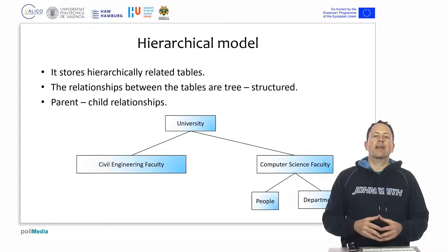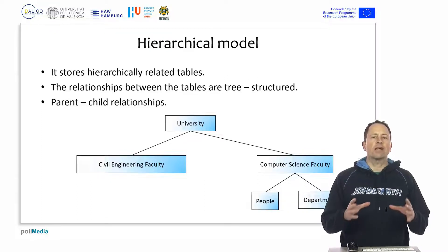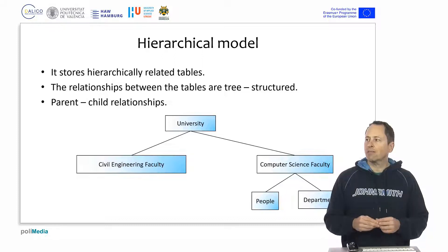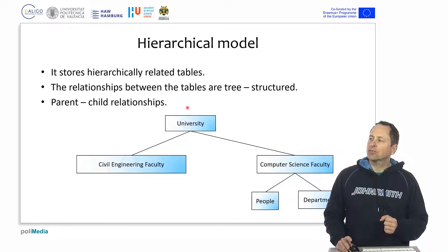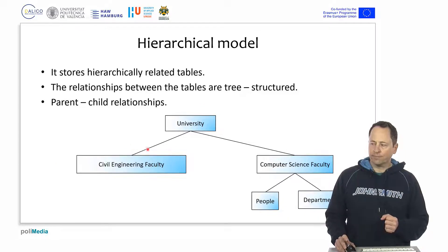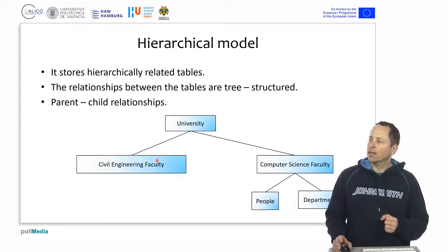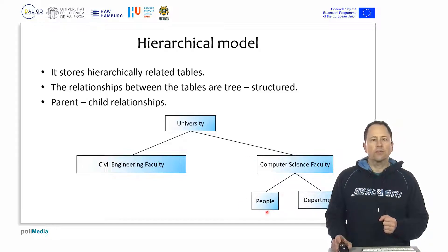A hierarchical model consists of storing tables — that is, storing datasets in a related way in a tree structure with parent-child relationships. For example, here we have a table in which data about universities is saved. Then we have another, its child, that contains information about the faculties — in this case, information about the School of Civil Engineering and the Faculty of Computer Science. Within each school, we have people and departments.